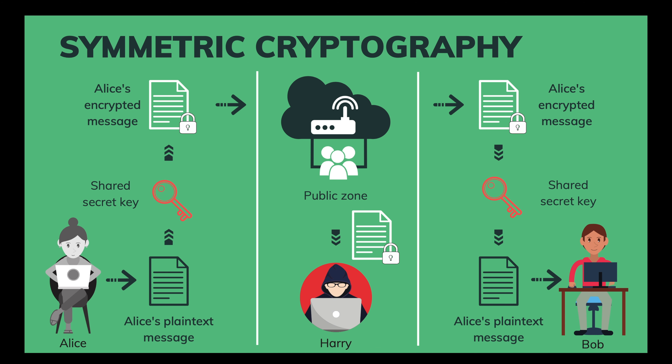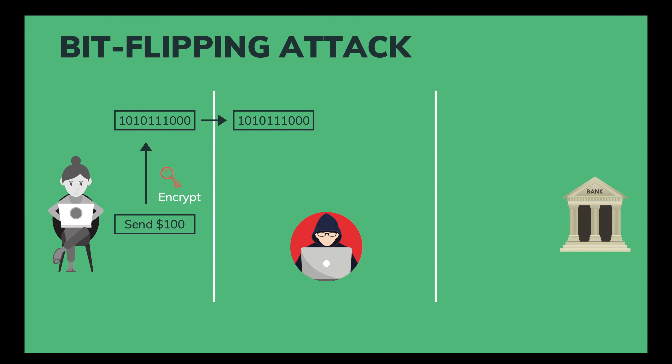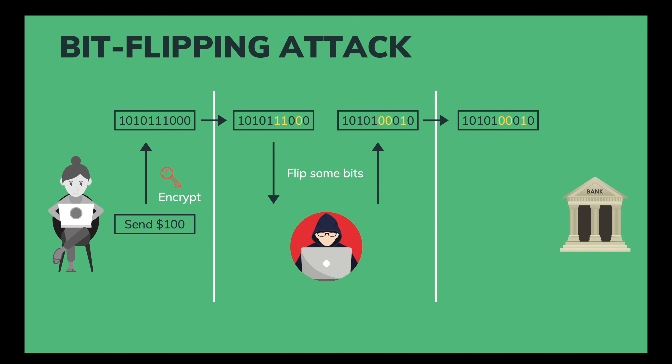But Harry can still change the message. There's a technique called a Bit Flipping Attack that works like this. Let's say Alice is talking to her online bank and wants to send $100 to someone. The message is encrypted with a secret key and sent to the bank. Harry catches the encrypted message. Although he can't decrypt it, he can flip some bits from 1 to 0 and 0 to 1, then forward that modified message to the bank. When the bank decrypts it, they get a different plaintext — in this case, $900 instead of $100. So it's very dangerous.